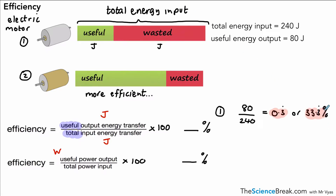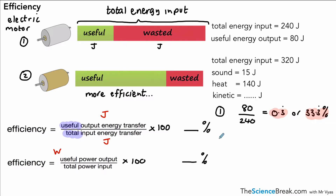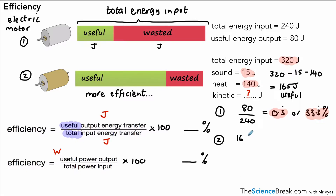For the second example, we've got a total energy input of 320 joules. Sound and heat make up 15 joules and 140 joules respectively. We want to find the kinetic energy transferred. Since energy cannot be created or destroyed, we do 320 minus 15 minus 140, which gives us 165 joules as the useful kinetic energy. So our efficiency is 165 divided by 320, which equals 0.52 as a decimal — or 52% as a percentage.